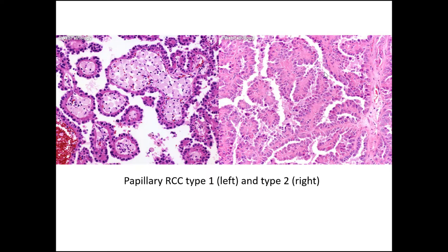Here's a papillary renal cell carcinoma type 1 on the left — notice a single layer. As you cut through sections tangentially you'll get a sense of multi-layering, but for the most part it has a single layer. This case has some eosinophilic cytoplasm but the nuclear grade appears low, with abundant foamy macrophages. While this example of type 2 papillary RCC lacks fibrovascular cores, has more of a tufted multi-layering epithelium, and has more conspicuous nucleoli or higher nuclear grade.